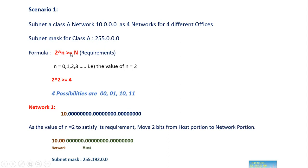Applying the formula 2 to the power of small n greater than or equal to capital N, with capital N equal to 4, we substitute small n starting from 0: 2^0 = 1 — does not satisfy; 2^1 = 2 — does not satisfy; 2^2 = 4 — satisfies the condition. So small n equals 2. With 2 bits borrowed, we get 4 possibilities: 00, 01, 10, and 11.